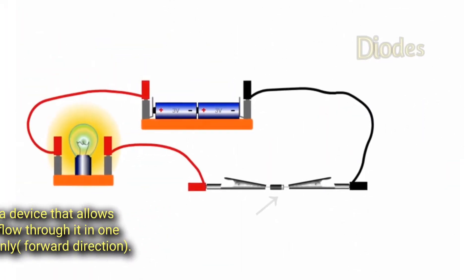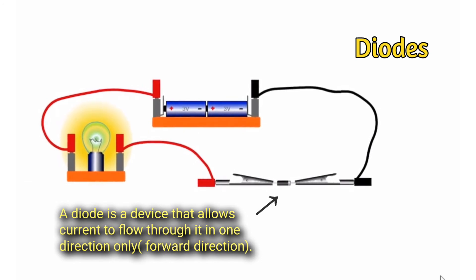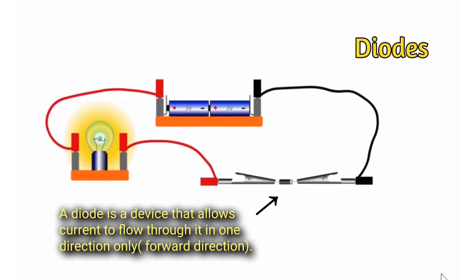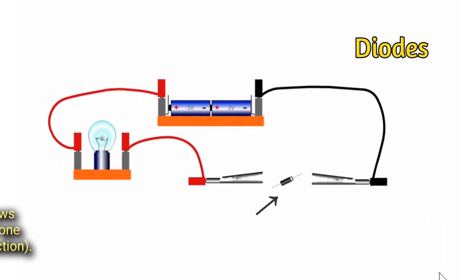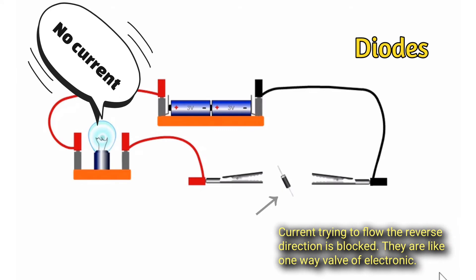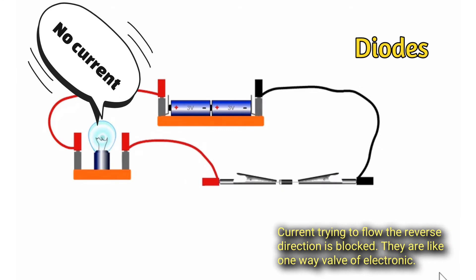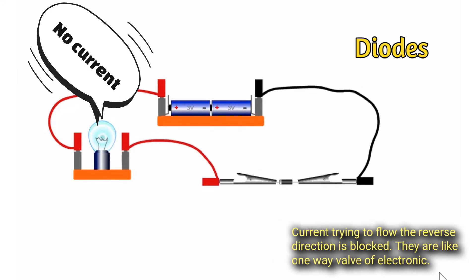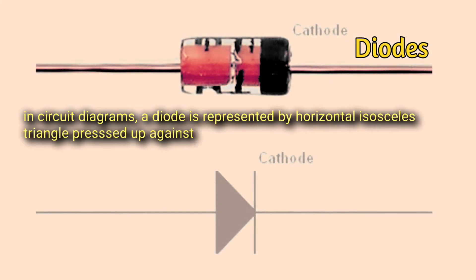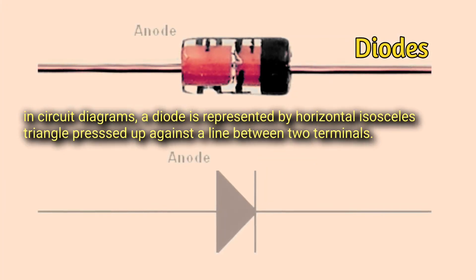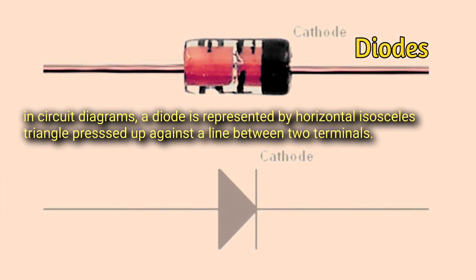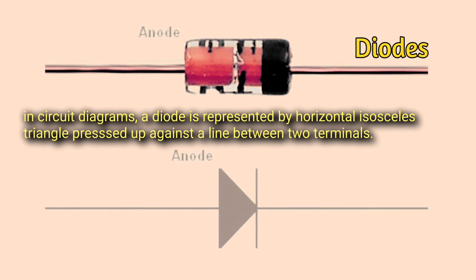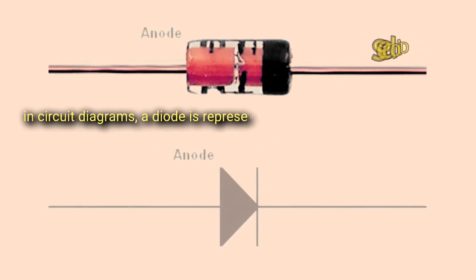Diodes: a diode is a device that allows current to flow through it in one direction only — the forward direction. Current trying to flow in the reverse direction is blocked. They are like the one-way valve of electronics. In circuit diagrams, a diode is represented by a horizontal isosceles triangle pressed up against a line between two terminals.